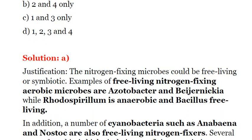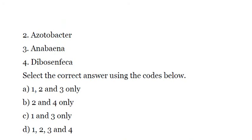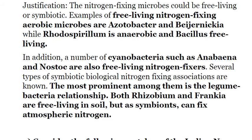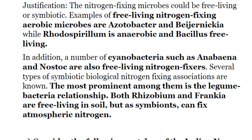Free-living nitrogen-fixing aerobic microbes include Azotobacter and Beijerinckia, while Rhodospirillum is anaerobic and Bacillus is free-living. There are also nitrogen-fixing bacteria that live in symbiotic relationships with other organisms — for example, the legume-bacteria relationship. Both Rhizobium and Frankia are free-living in soil, but as symbiotes they can fix atmospheric nitrogen.